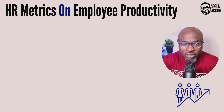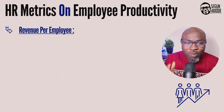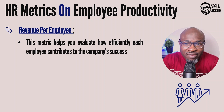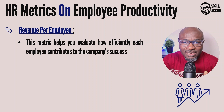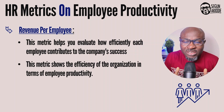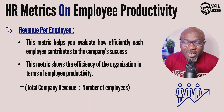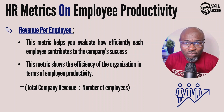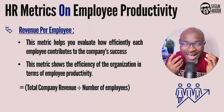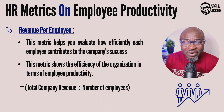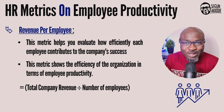HR metrics on employee productivity. First, revenue per employee. This metric helps to evaluate how efficiently each employee contributes to the company's success. It shows the efficiency of the organization in terms of employee productivity, and can be calculated by taking the total company revenue over a period of time divided by the number of employees. Since organizations are cost-driven, it is critical that employee revenue contribution also speaks to the level of efficiency.